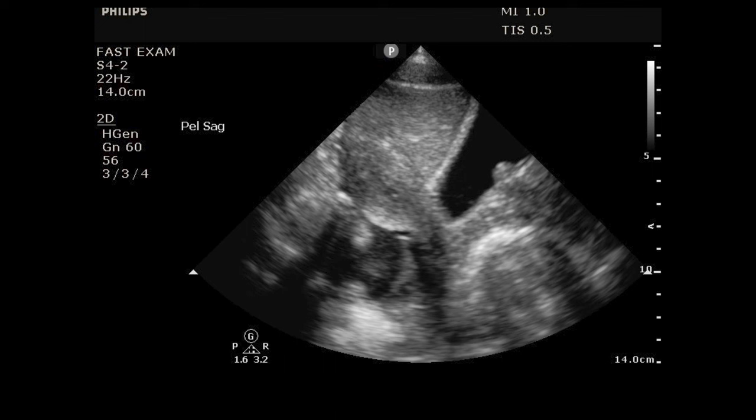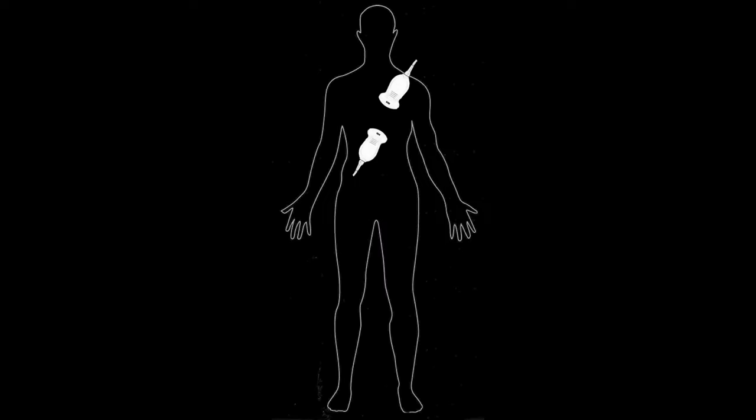Those are the three basic abdominal windows of the FAST exam: right upper quadrant, left upper quadrant, and pelvis. Moving up to the chest, we take the cardiac book off the shelf. The goal here is to look for hemopericardium — fluid around the heart. If the patient has been recently traumatized and fluid is around the heart, we must assume first that it's from the trauma. That will accumulate rapidly, progress to tamponade, and the patient can die.